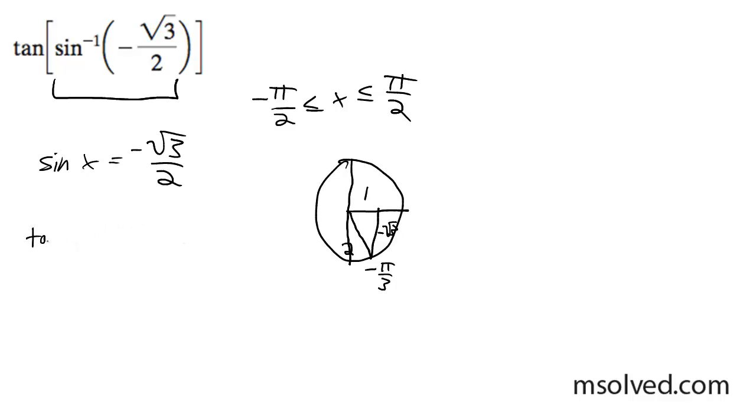So it's going to be tangent of negative pi over 3, which is simply going to be equal to negative root 3 because it's y over x, which is opposite over adjacent.